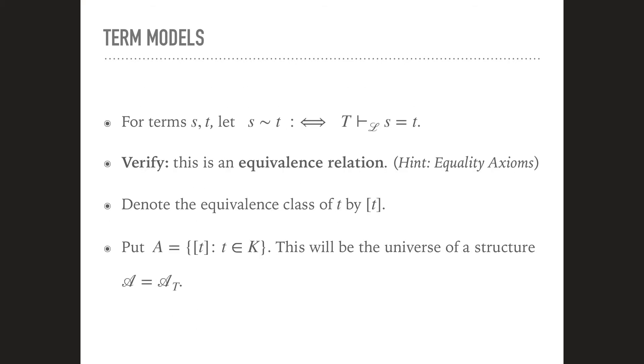So in our intended universe, we need to identify these terms. So let's do that. So for terms s and t, we say s is equivalent to t if and only if T proves that s is equal to t. We first need to verify that this is actually an equivalence relation. And that's precisely what you need the equality axioms for. So it's not hard. Take a look at the equality axioms and then show that this is indeed an equivalence relation. So once we know that this is an equivalence relation, we can take the equivalence classes and we denote the equivalence class of a term t by square bracket t.